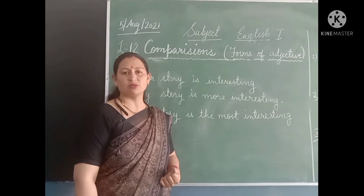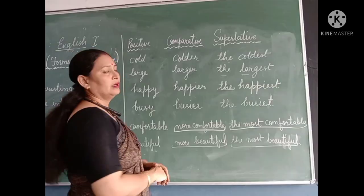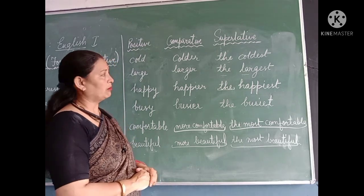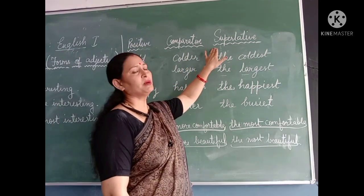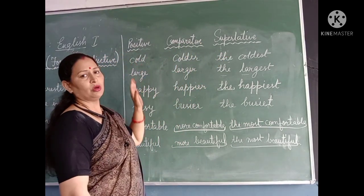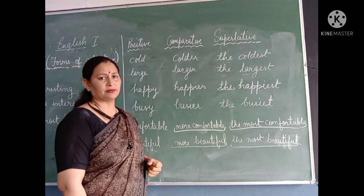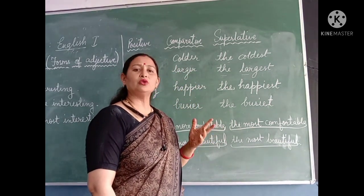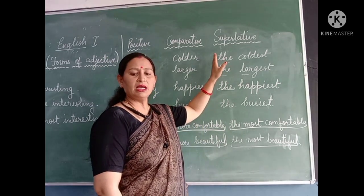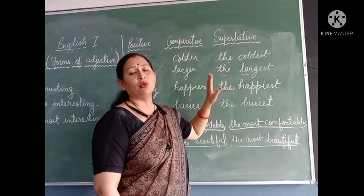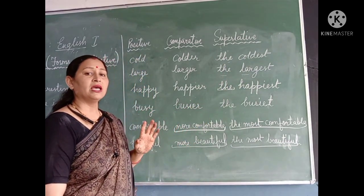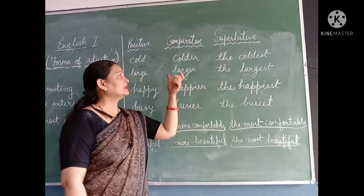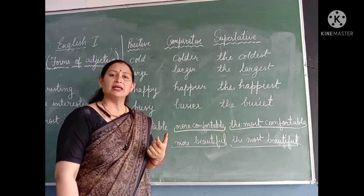Let us go through this small table to understand the three forms of adjective and where to use which form: positive, comparative, and superlative. The positive or basic form is used when there is no comparison. The comparative degree is used when we compare two things or two persons. The superlative degree is used when we compare more than two. We always use 'the' with the superlative degree, and 'than' with the comparative degree.